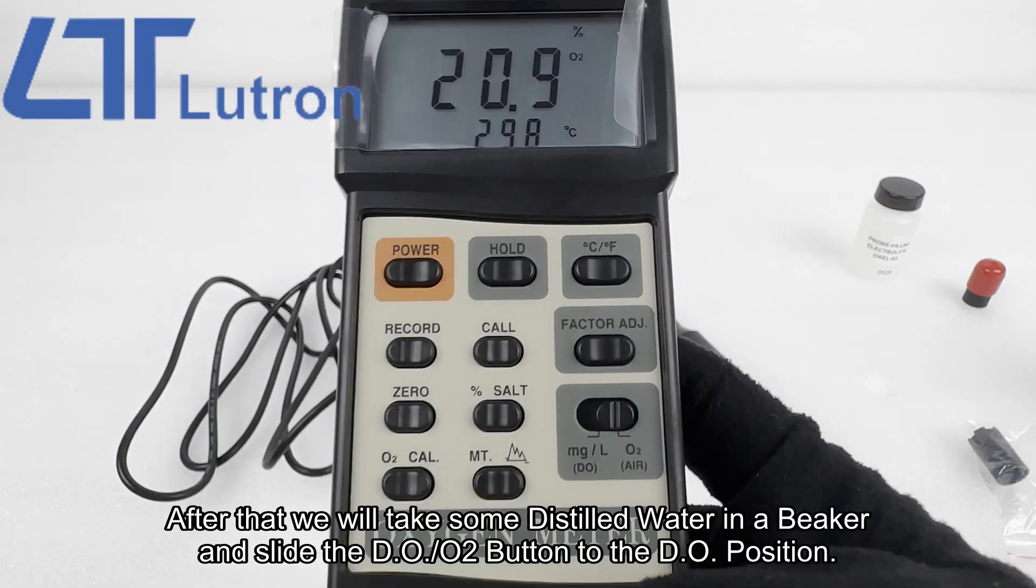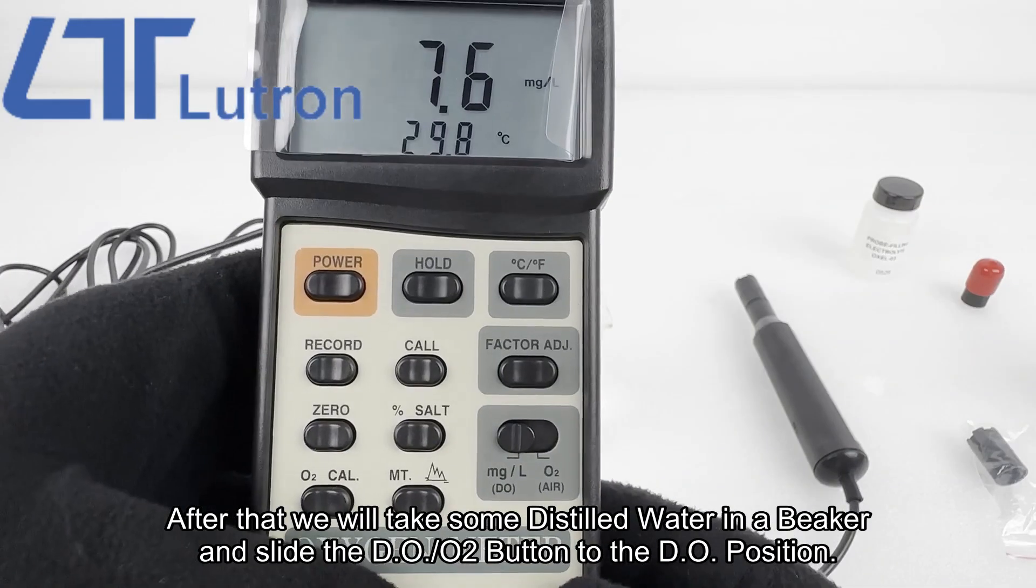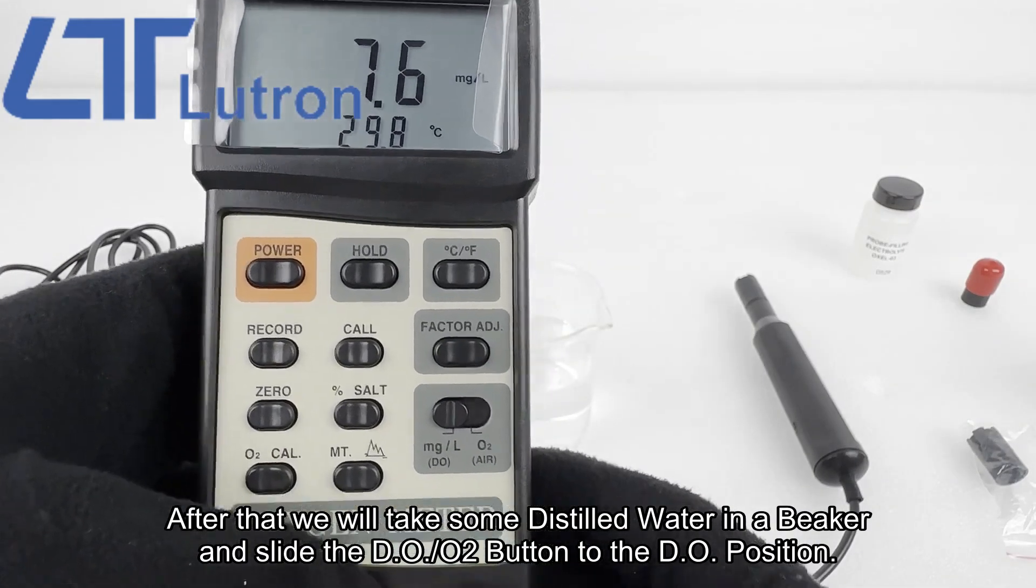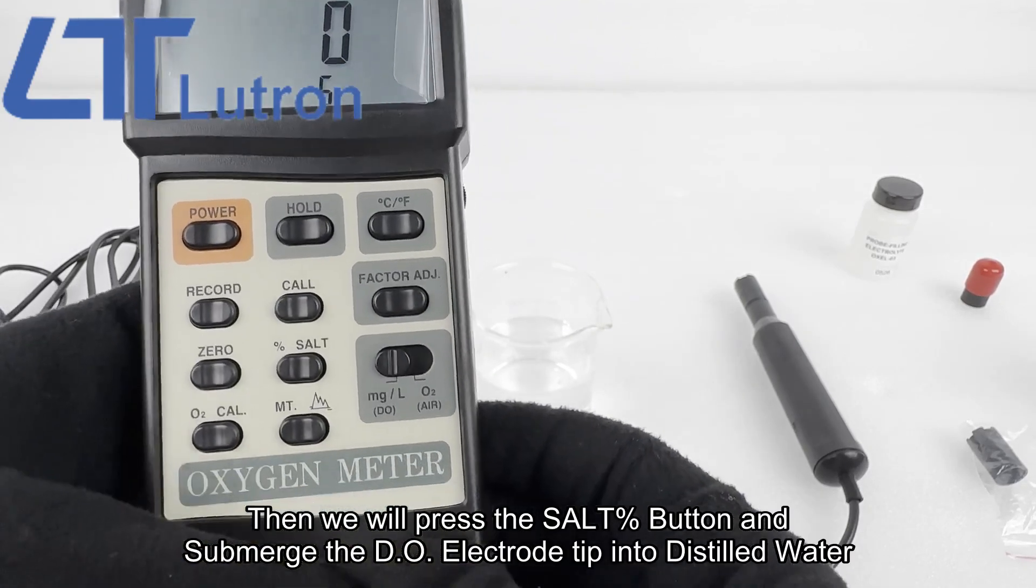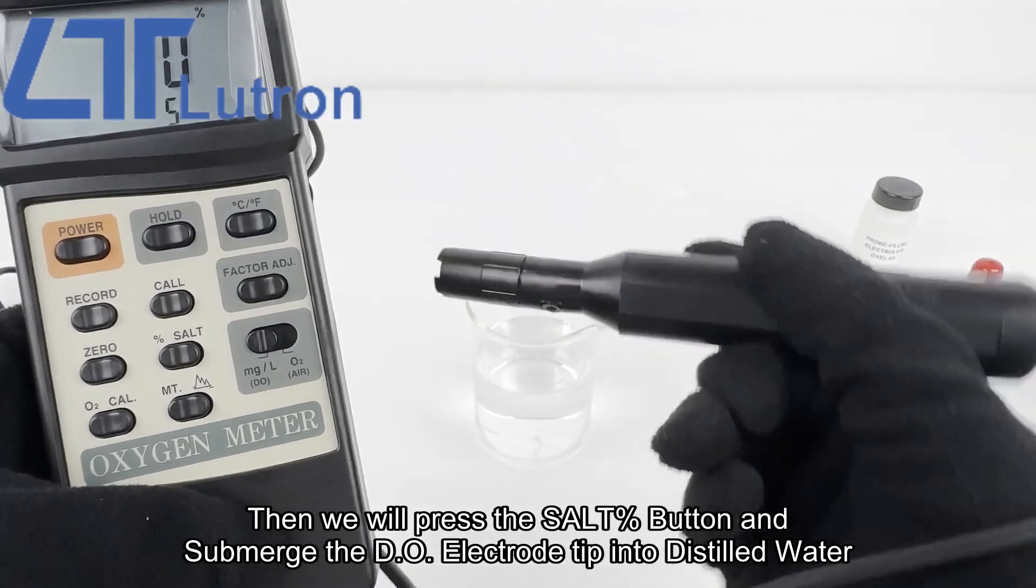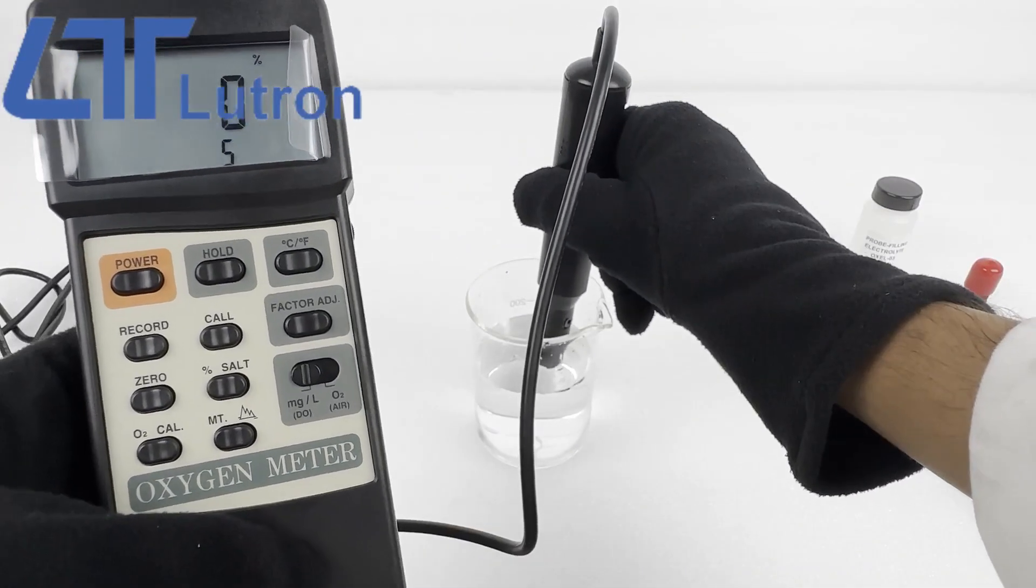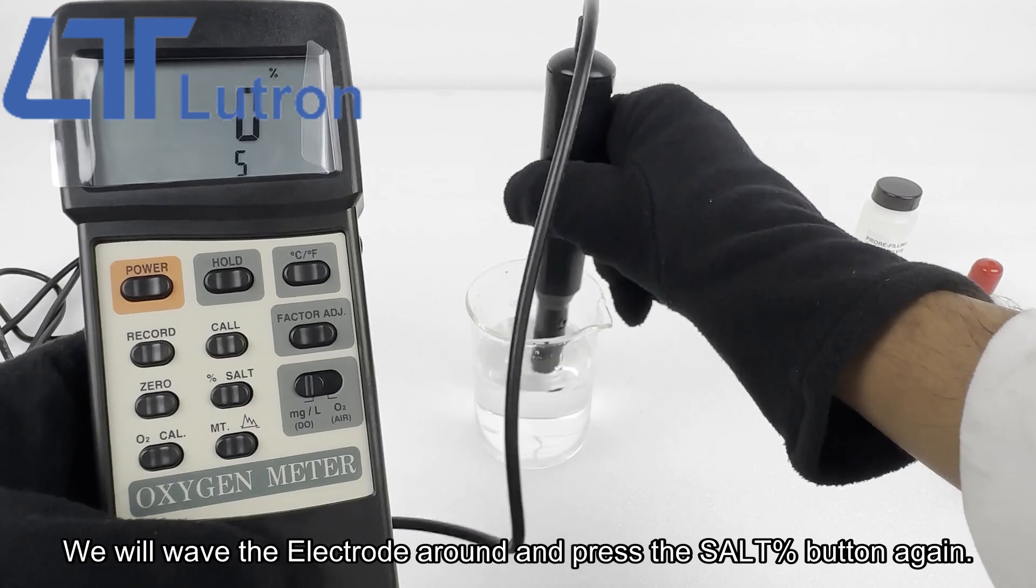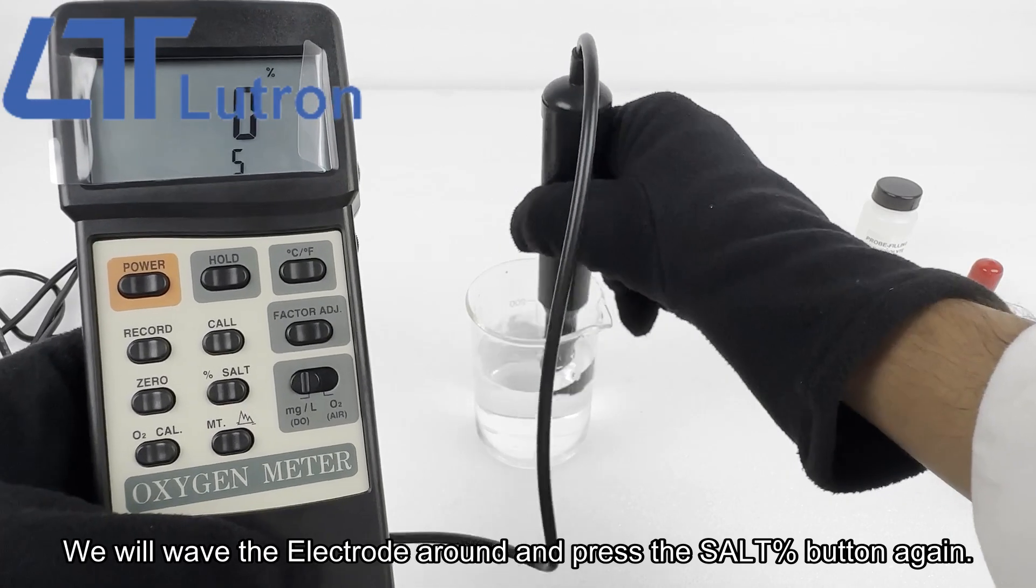After that, we will take some distilled water in a beaker and slide the DO O2 button to the DO position. Then we will press the salt percent button and submerge the DO electrode tip into distilled water. We will wave the electrode around and press the salt percent button again.